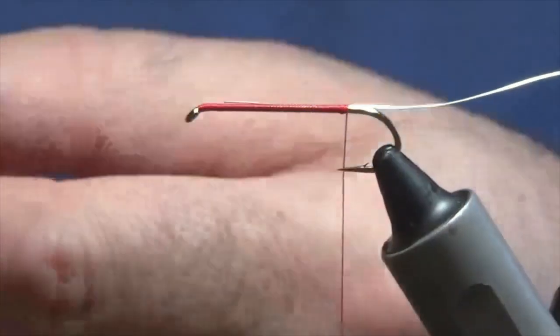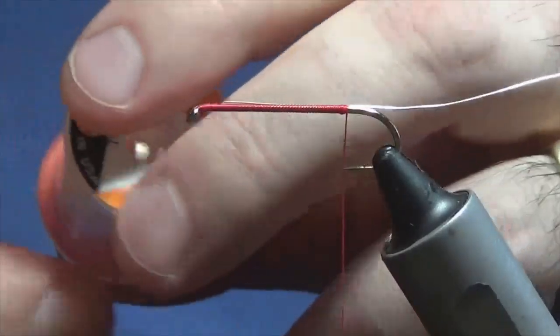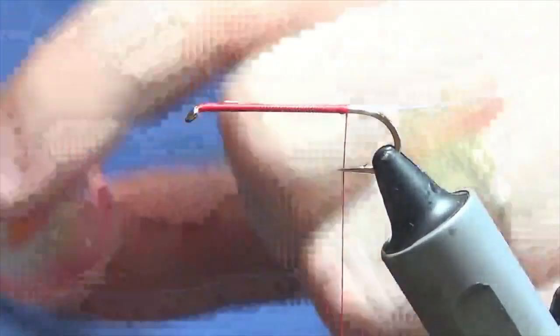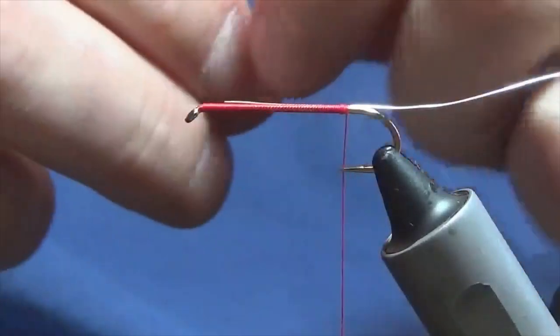Don't be too stingy with the wire because this is a long shank hook. You need to make sure you've got enough that you're getting up to the top. The body is going to be the Obamaras tinsel in large.